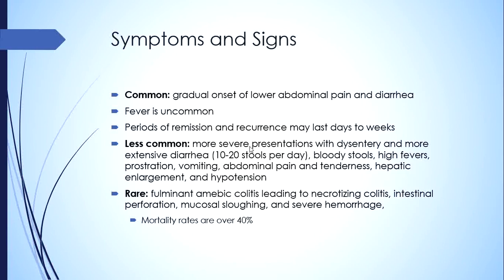The disease is associated with periods of remission and recurrence — the patient may improve and then have recurrence of symptoms — continuing for days or several weeks. Less commonly it presents with more severe disease with dysentery and more extensive diarrhea of up to 10 to 20 stools per day, bloody stools, high fevers, prostration, vomiting, abdominal pain and tenderness.